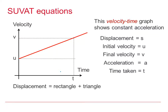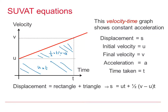I'm now going to find the area underneath this graph again using the area of a rectangle and a triangle. The area of the rectangle is U times T, and the area of the triangle is a half of the base T times the height (V minus U). We know that V minus U equals AT from earlier, so S equals UT plus a half AT squared is our third SUVAT Equation.